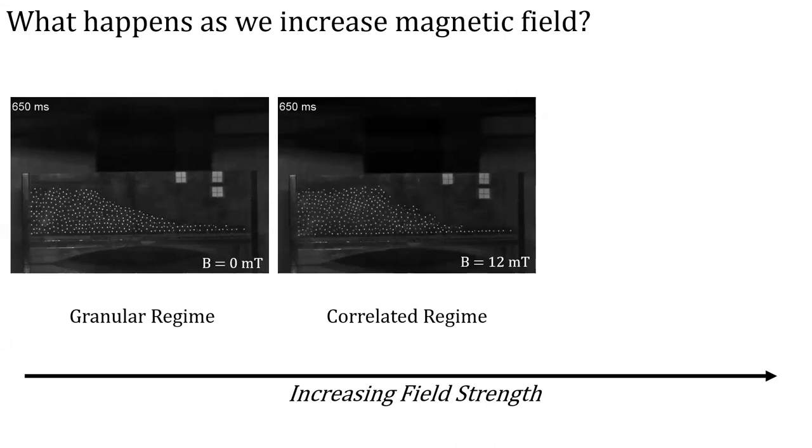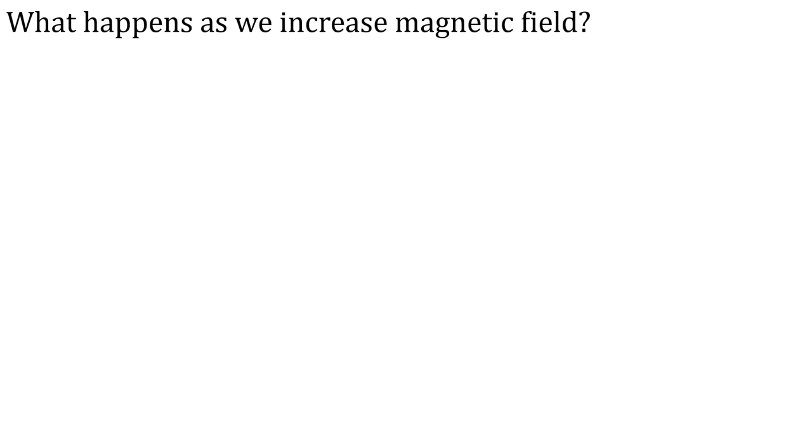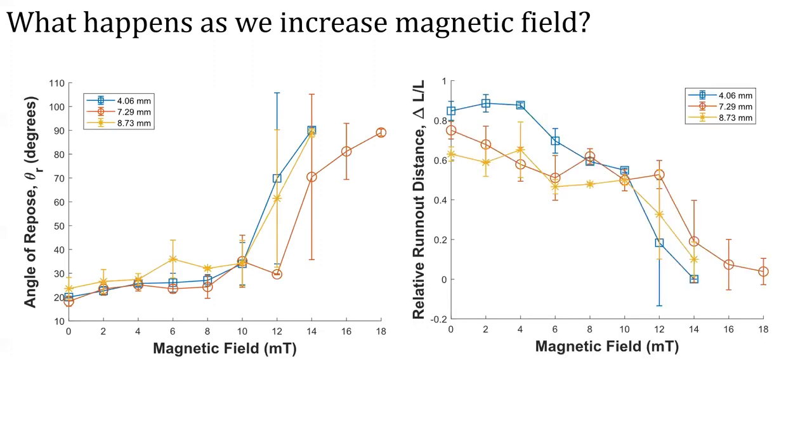And then ramp up the field even further, and you get to what's called the plastic regime, where the forces are sufficiently strong, so that a 90 degree angle is maintained. Effectively the force from the magnetic field is strong enough that they can overcome the avalanching due to gravity. And so when you plot out the angle of repose and the runout distance for different magnetic field strengths and different particle sizes, you indeed see these trends.